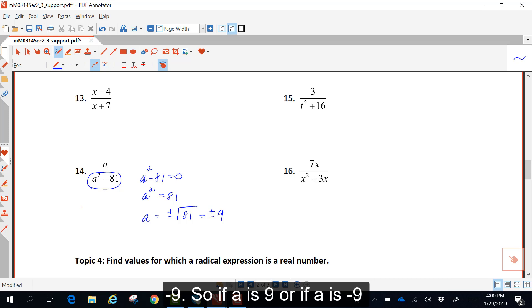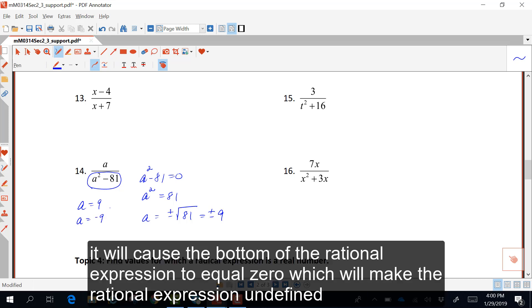So if a is 9, or if a is negative 9, it will cause the bottom of the rational expression to equal 0, which will make the rational expression undefined.